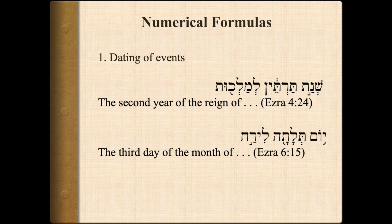There are several numerical formulas. For example, the dating of events. In this kind of formula, you have the word 'year' — Shanat — in construct to the number, such as Shanat-tartain, and then 'of the king,' followed by the name of the king.